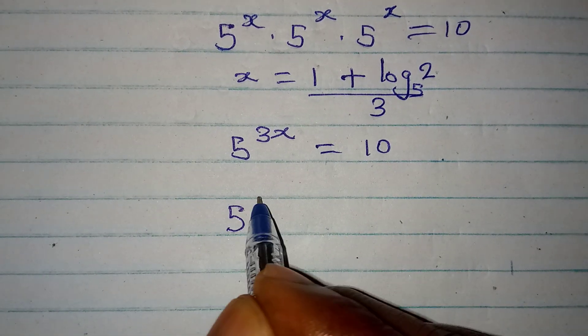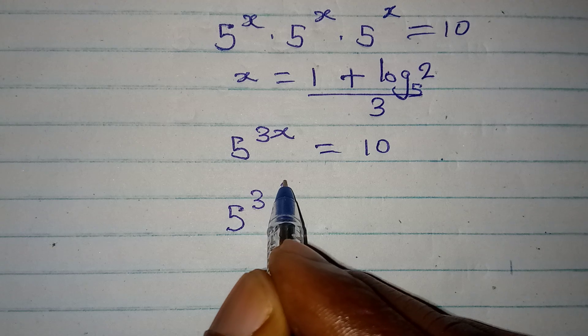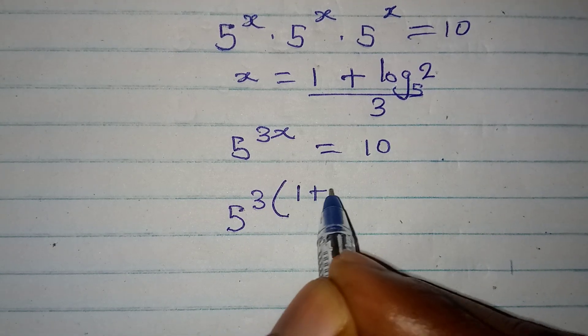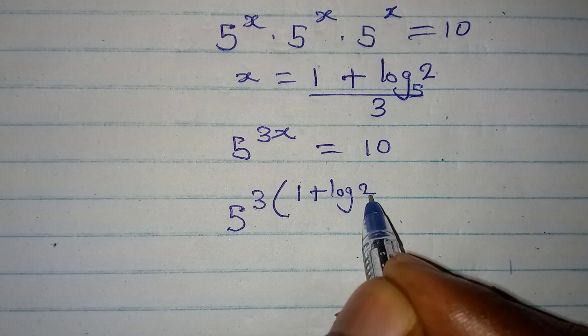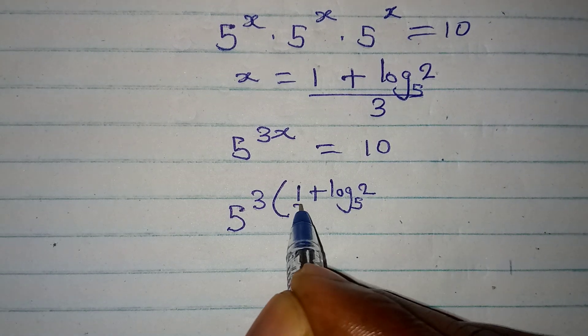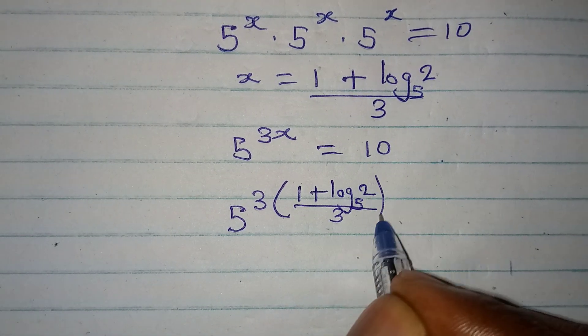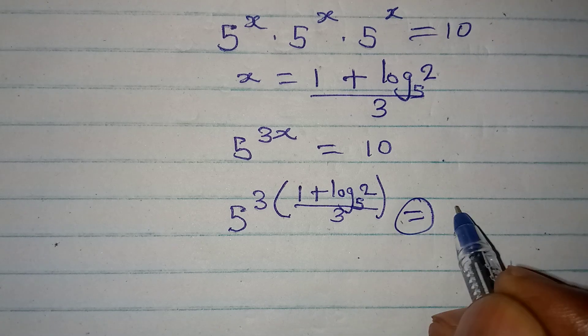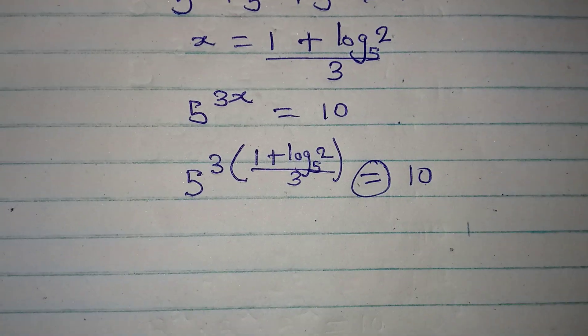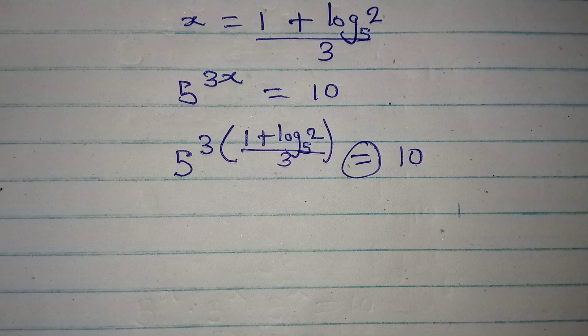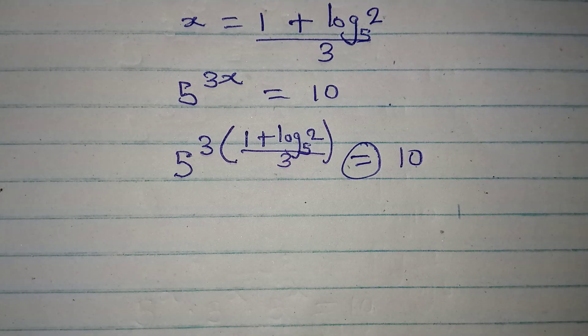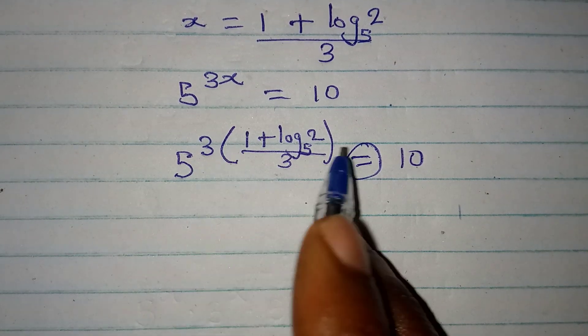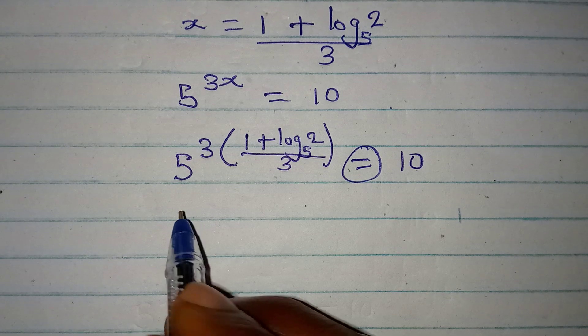we have 5 to the power of 3. And in place of x, I write 1 plus log 2 to base 5. And the whole of this is over 3. Now, will this give us 10? We are working on it. Now, my attention will be on the left-hand side now. Open this bracket first. So, if I do that, or by the way, this can just cancel this.